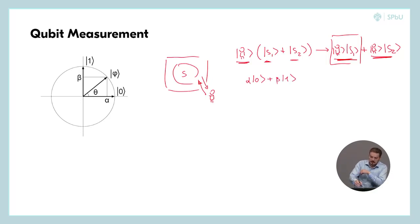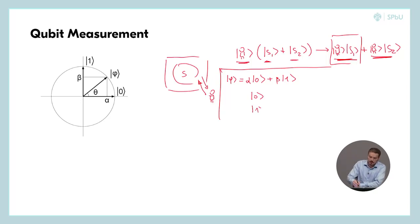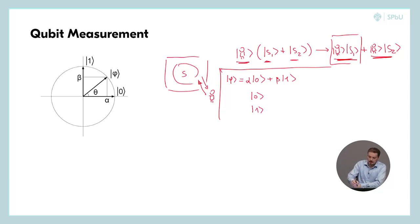Like this — we have vector phi here. But after the measurement, the system will be either in state |0⟩ or in state |1⟩. And the probability to obtain state |0⟩ as the measurement outcome equals |α|², and the probability to get outcome |1⟩ equals |β|².